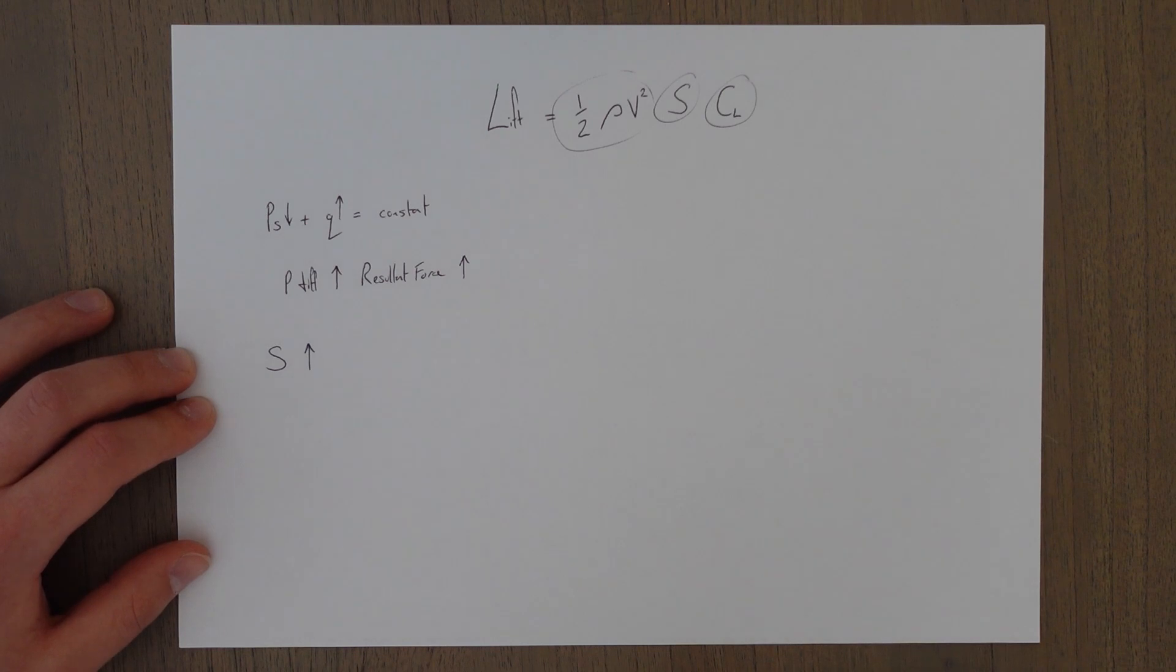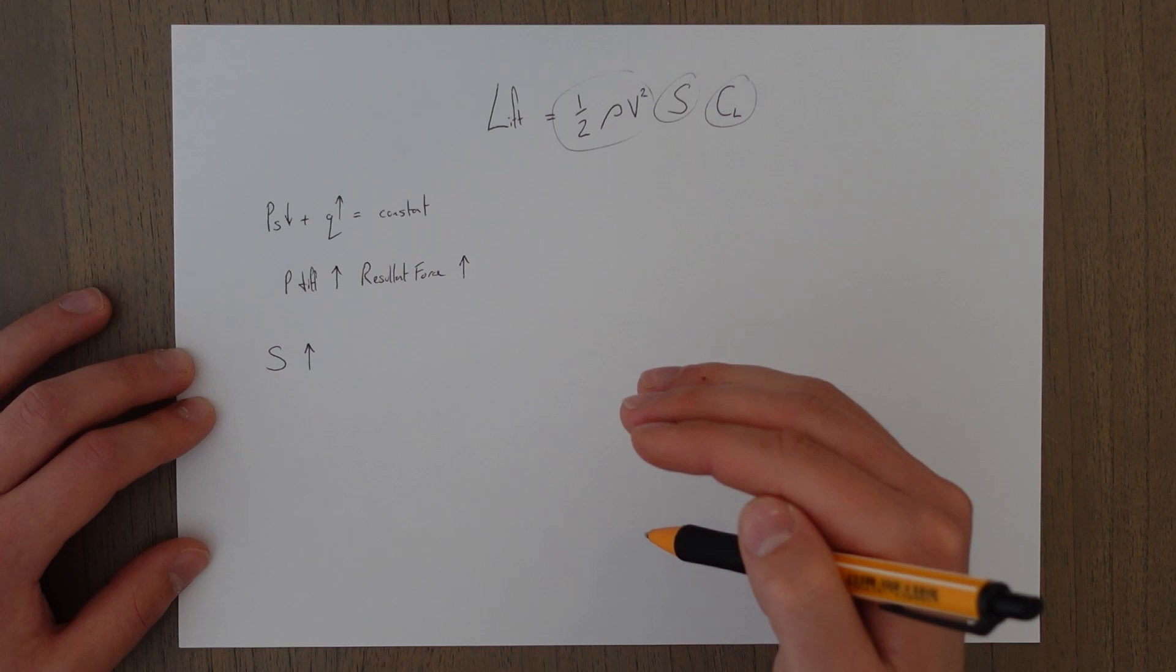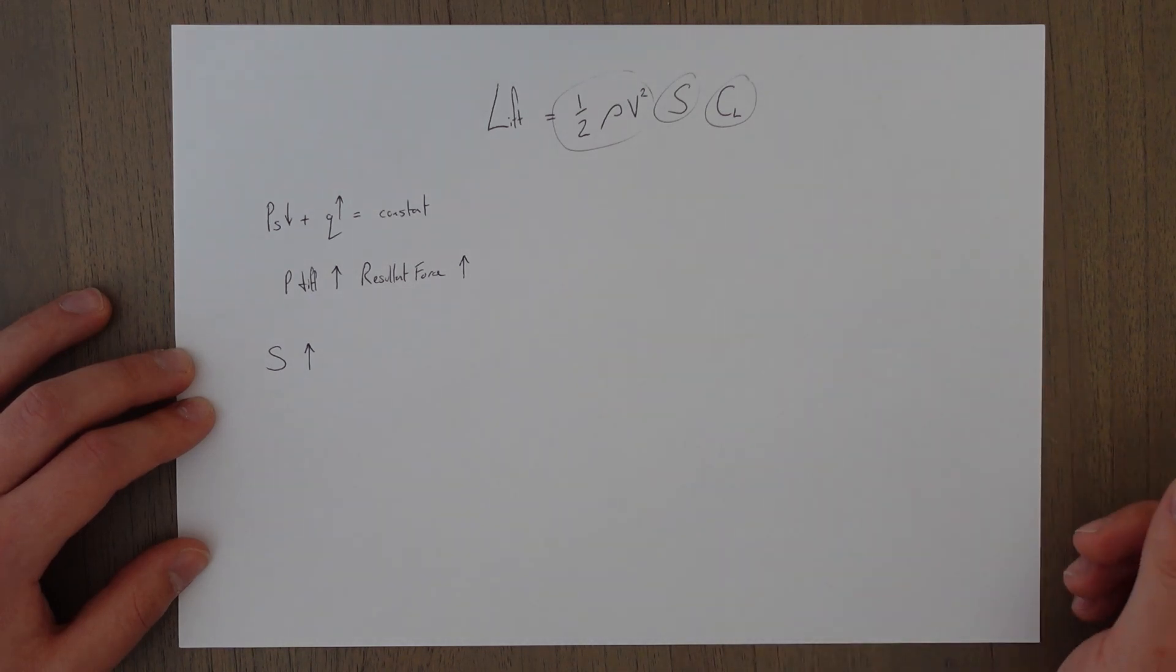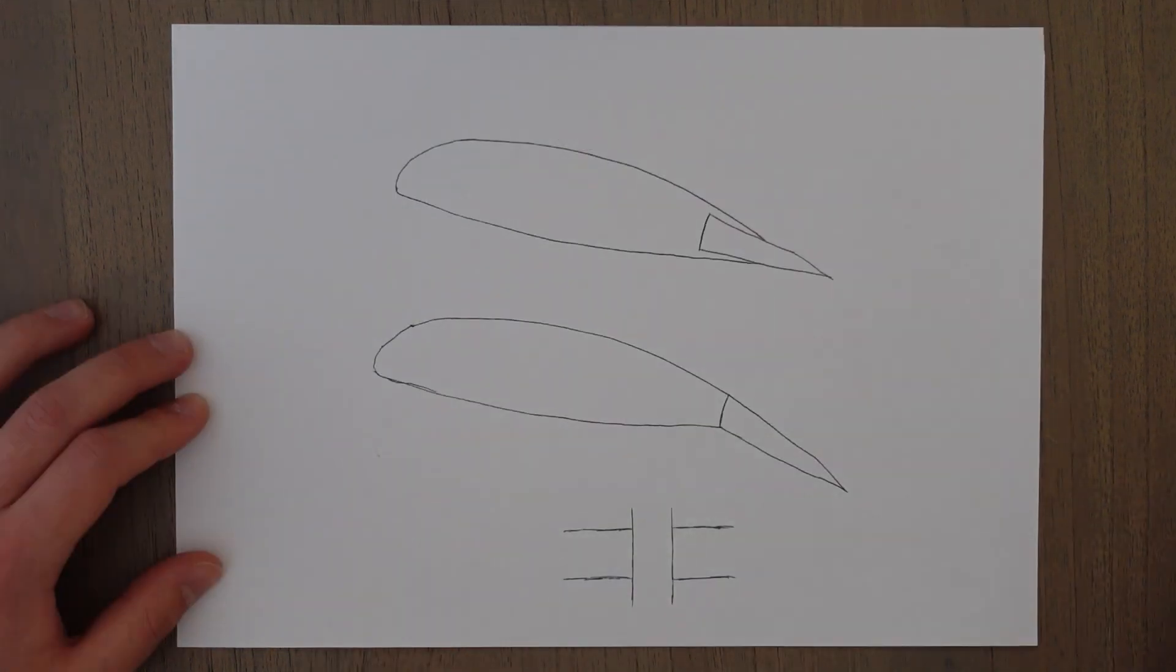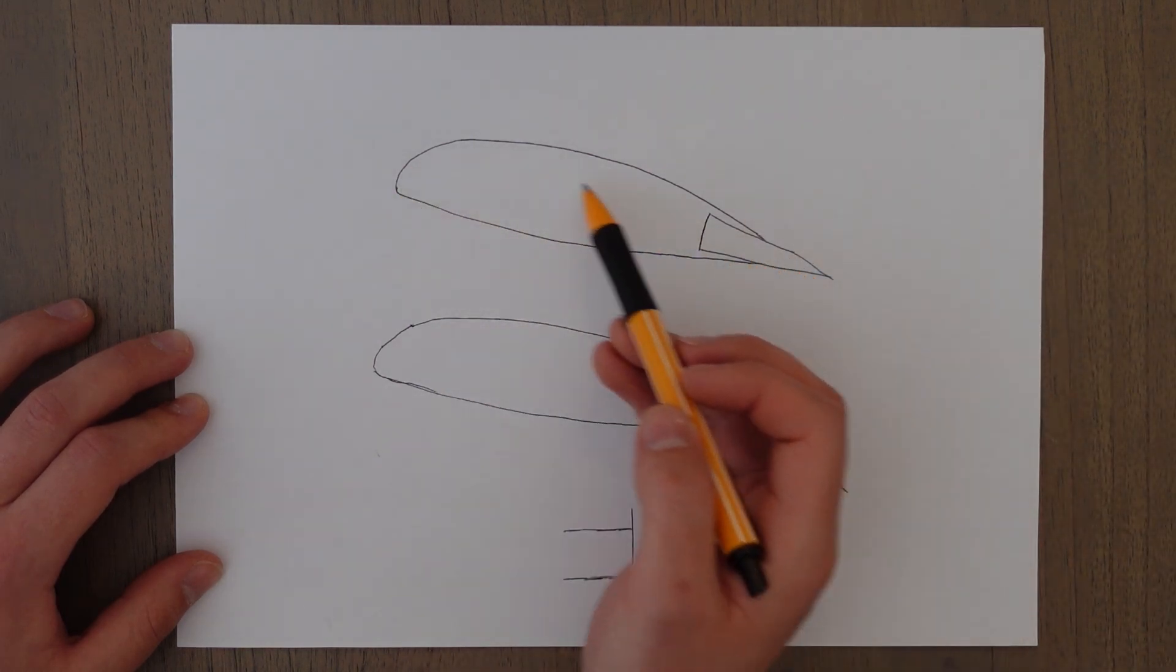Well most modern jet wings have flaps that extend out and down out of the back of the trailing edge. It typically looks something like this.